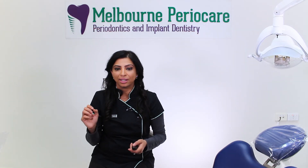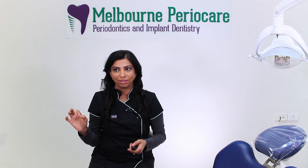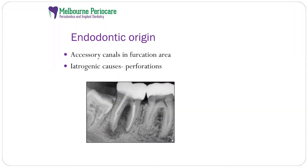The endodontic origin is the second biggest reason for furcation involvement. It is usually caused because accessory canals are present in the furcation area, and sometimes it's because of perforations caused during root canal treatment. Pulp necrotic products can spread through these accessory canals into the inter-radicular zone, causing loss of bone. The periapical area may or may not be involved.